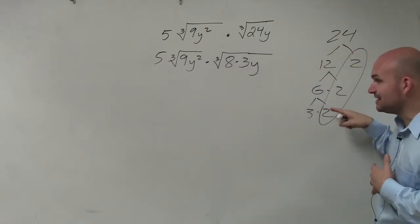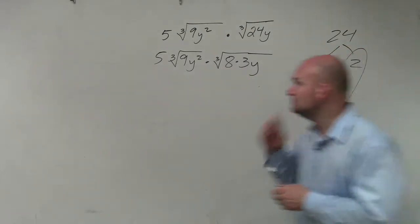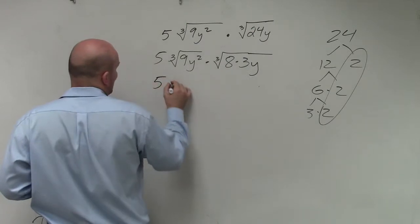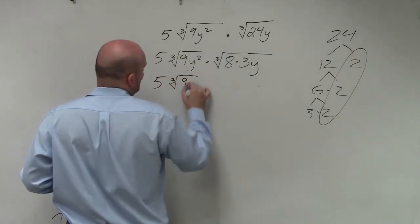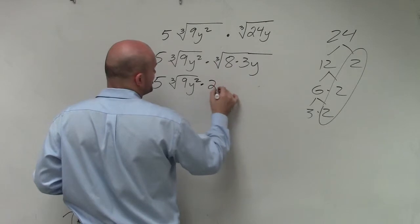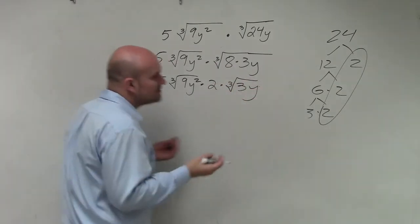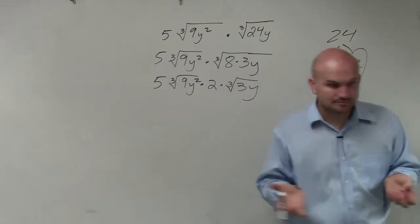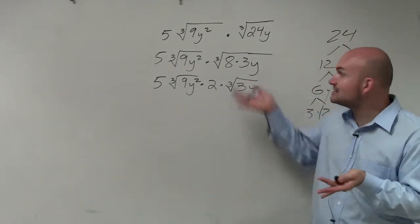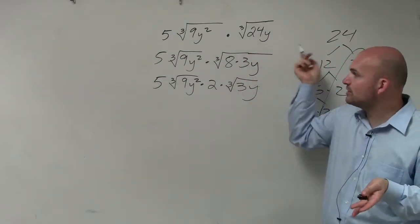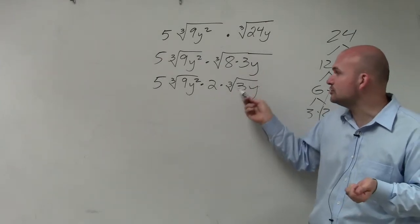The cube root of 8 is the same thing as 2 times 2 times 2. So that answer is just going to be 5 cube root of 9y² times, the cube root of 8 is 2, times the cube root of 3y. So now when you guys look at this problem, basically what I've done is I've simplified the cube root of 24y into 2 times the cube root of 3y.